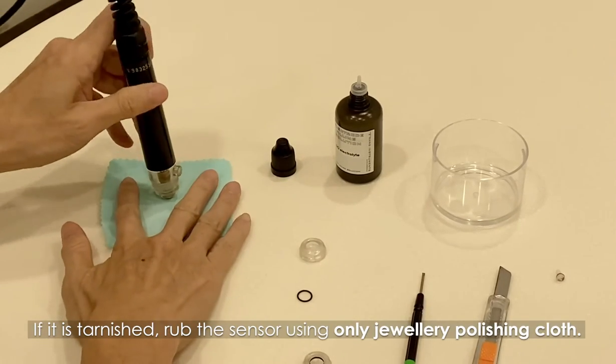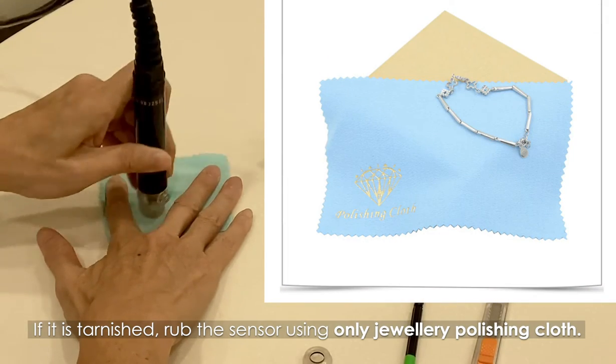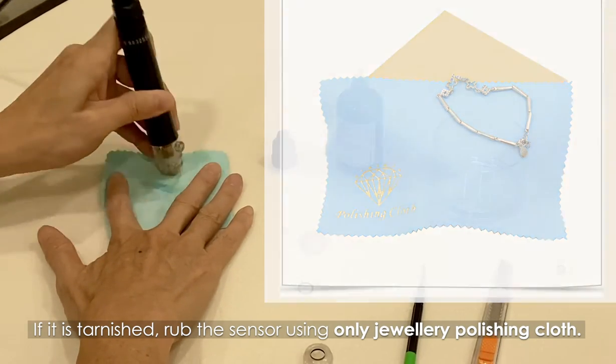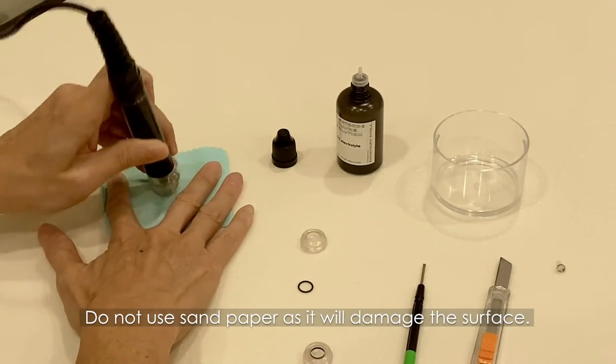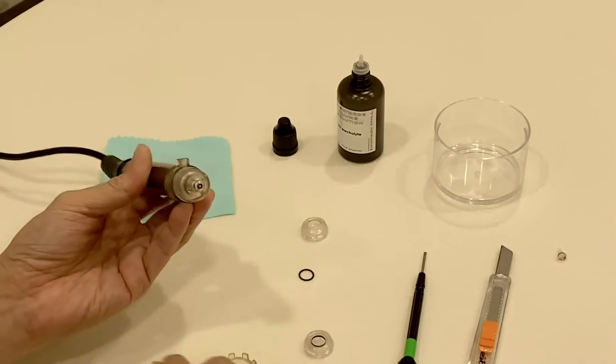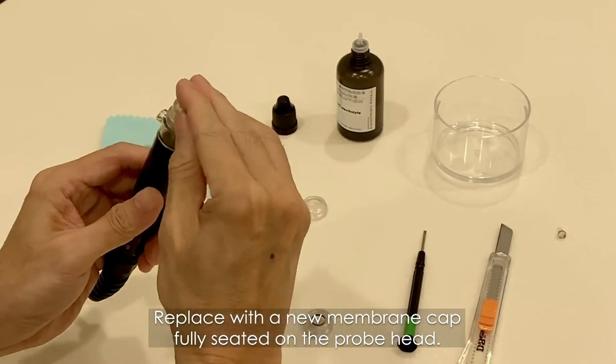Check if the anode and cathode sensor are tarnished. If it is tarnished, rub the sensor using only jewelry polishing cloth to polish the sensor. Be careful not to use sandpaper as it will damage the surface.